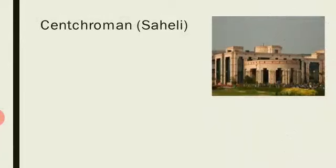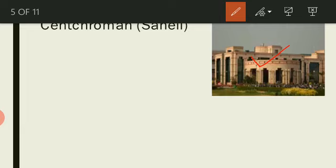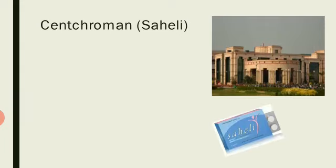The last concept is Centchroman, discovered by scientists of CDRI Lucknow. Scientists from this institute discovered a contraceptive pill that is the first of its kind in the world. Its name is Saheli, and its chemical composition is Ormeloxifene. Saheli was developed for the first time in the world by CDRI Lucknow scientists.